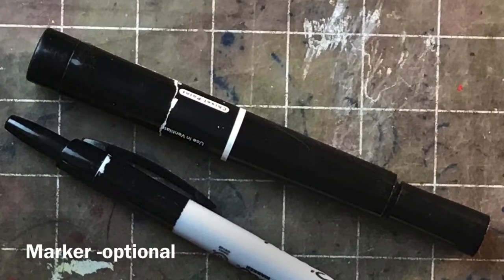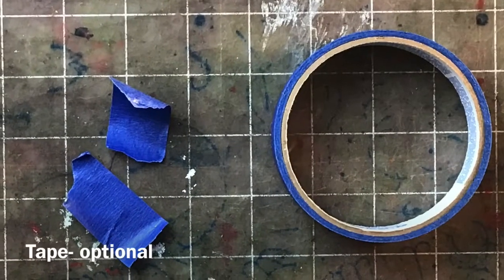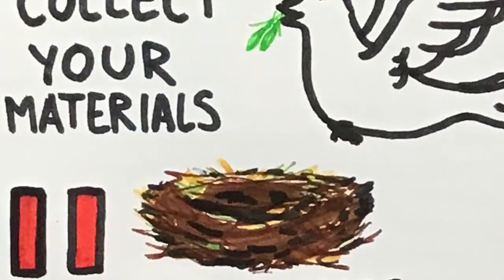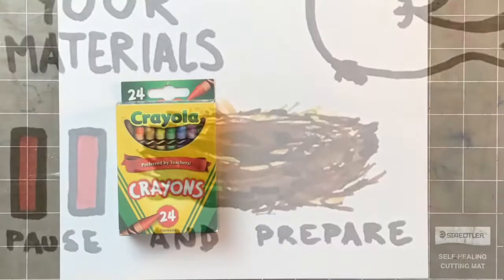You could use a marker, that's optional if you want to outline some of your shapes, and then tape is also optional. I use that today in some of my gathering of textures. So go ahead and collect your materials, pause until you're ready, and then meet me here.